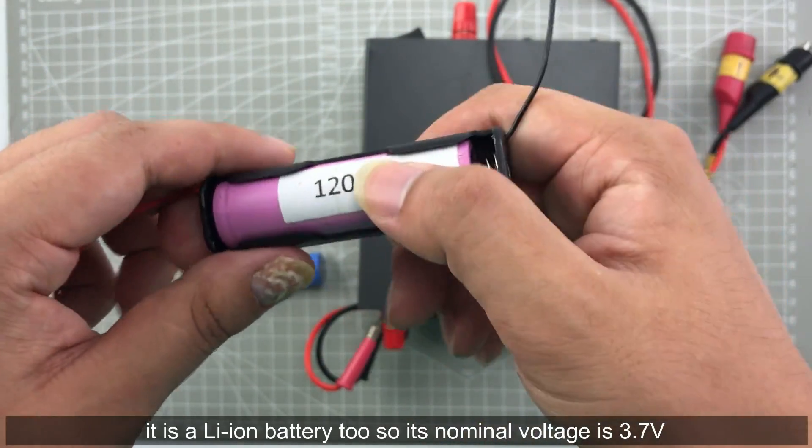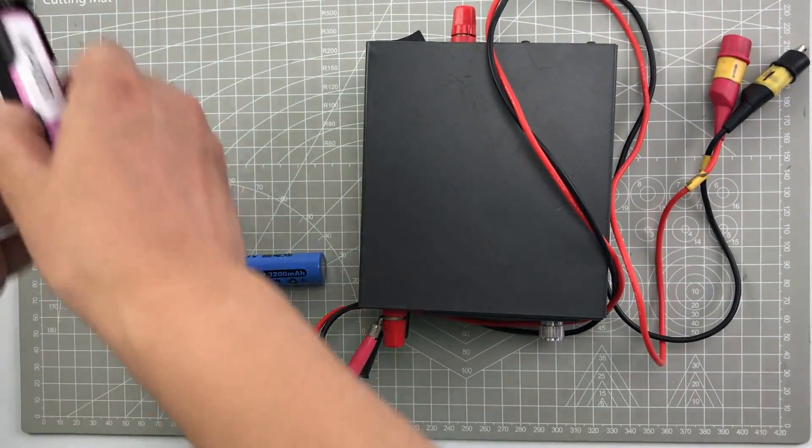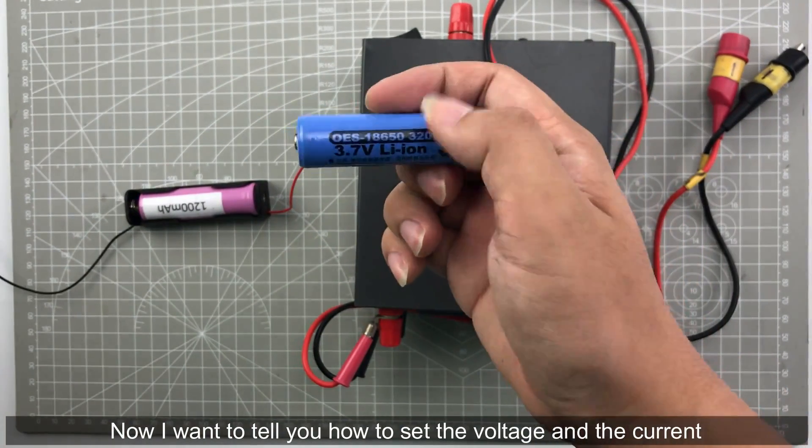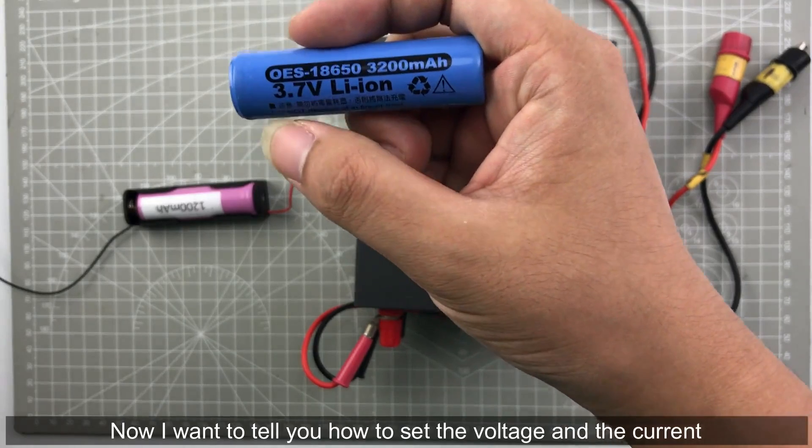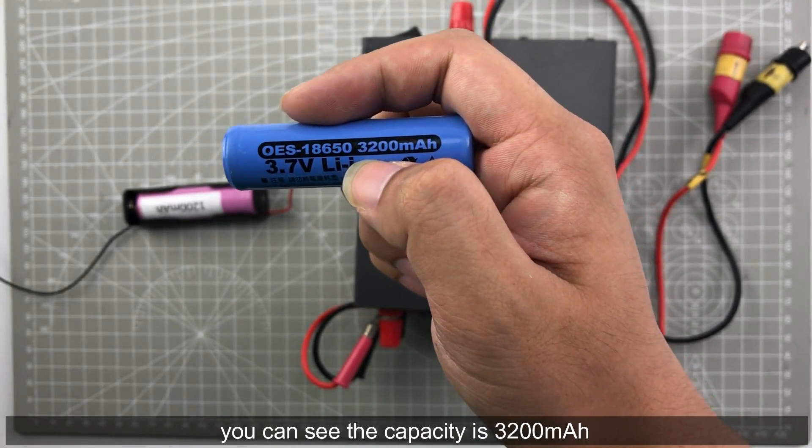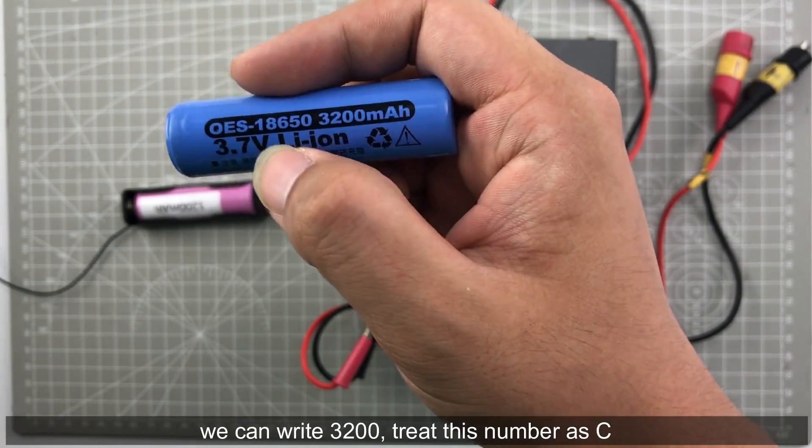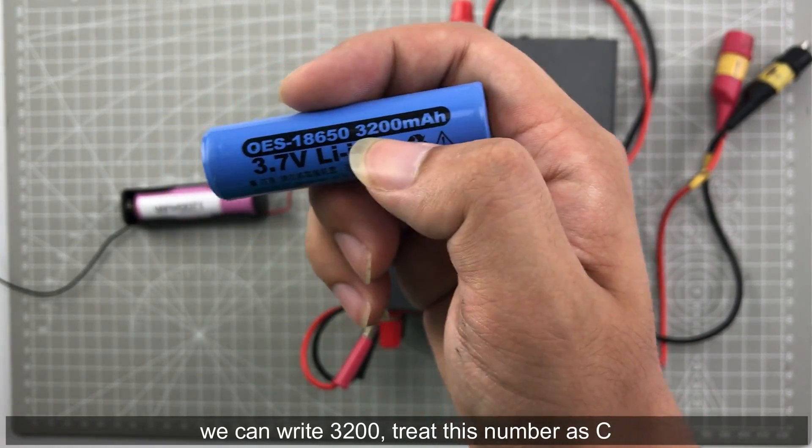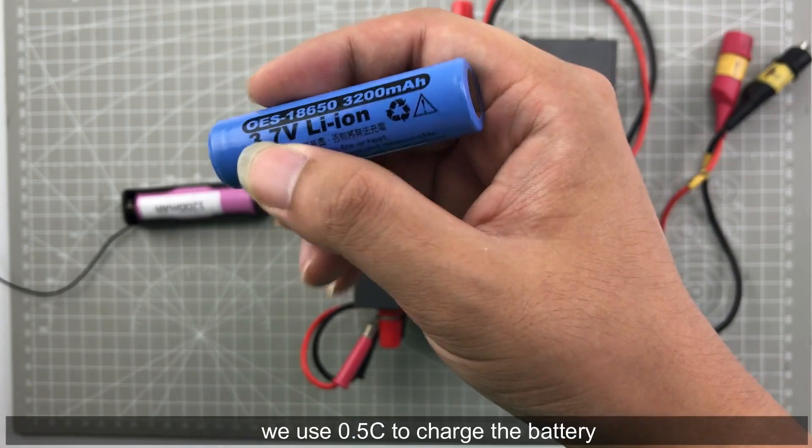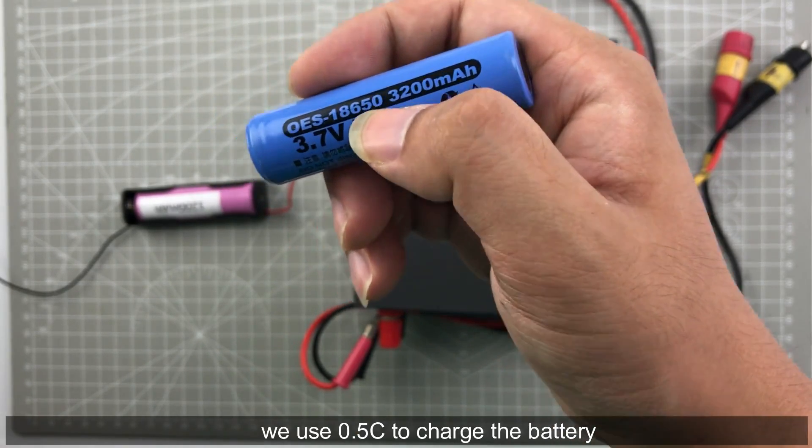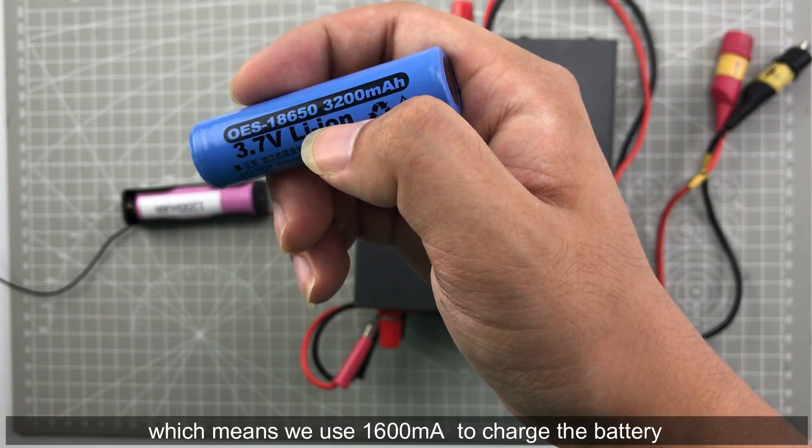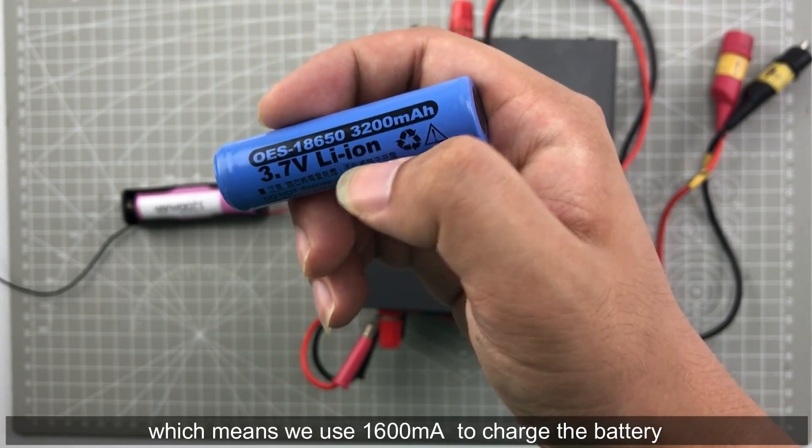Now I want to tell you how to set the voltage and the current. You can see the capacity is 3200 milliamp hour. Remember this number as C. We use half C to charge this battery which means we use 1600 milliamp to charge this battery.